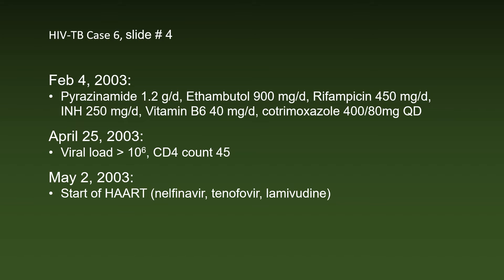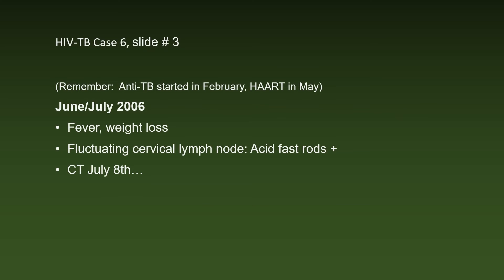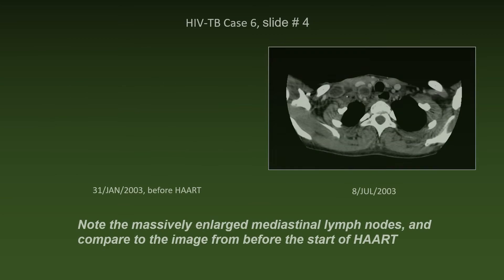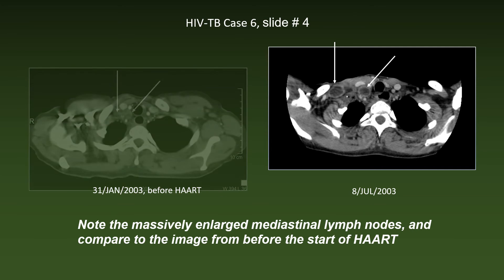End of April, the viral load had risen further to more than 1 million and the CD4 count declined to 45. On May 2nd, 2003, HAART was started with nelfinavir, tenofovir, and lamivudine. Remember, anti-TB treatment was started in February and HAART in May. But in June and July of 2003, she didn't feel better — she had fever and continued weight loss. Fluctuating cervical lymph nodes yielded pus with acid-fast rods. Note the massively enlarged mediastinal lymph nodes on the CT scan from July 8th, compared to the image from before the start of HAART.